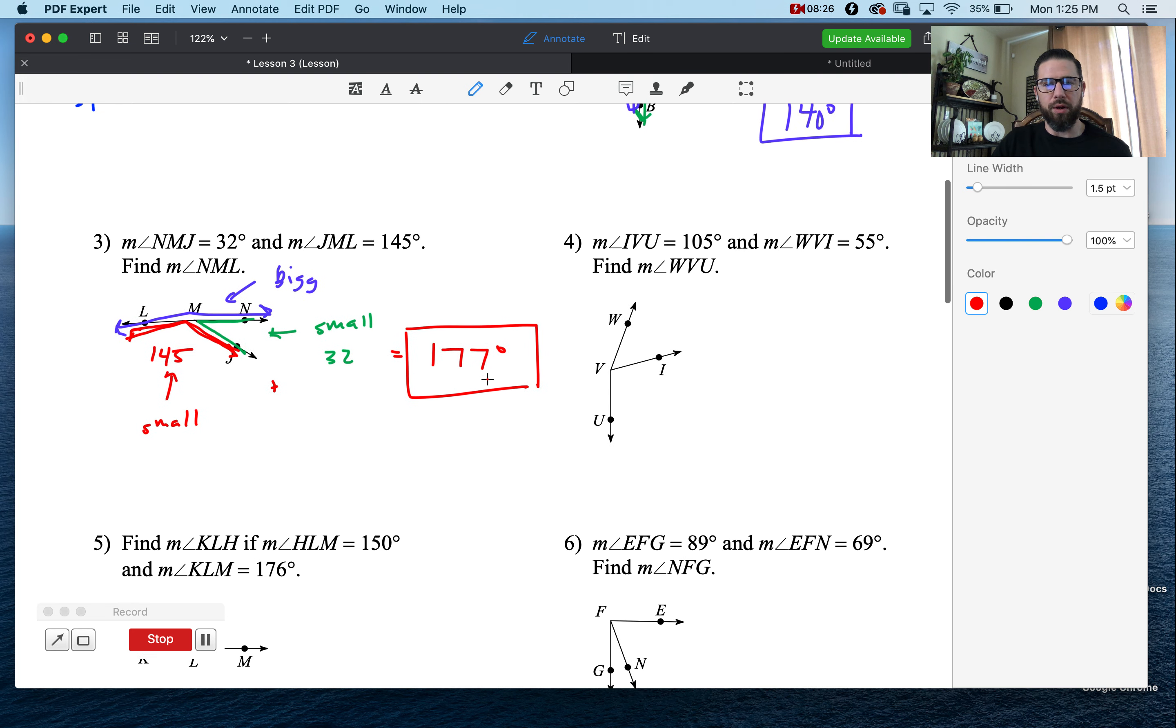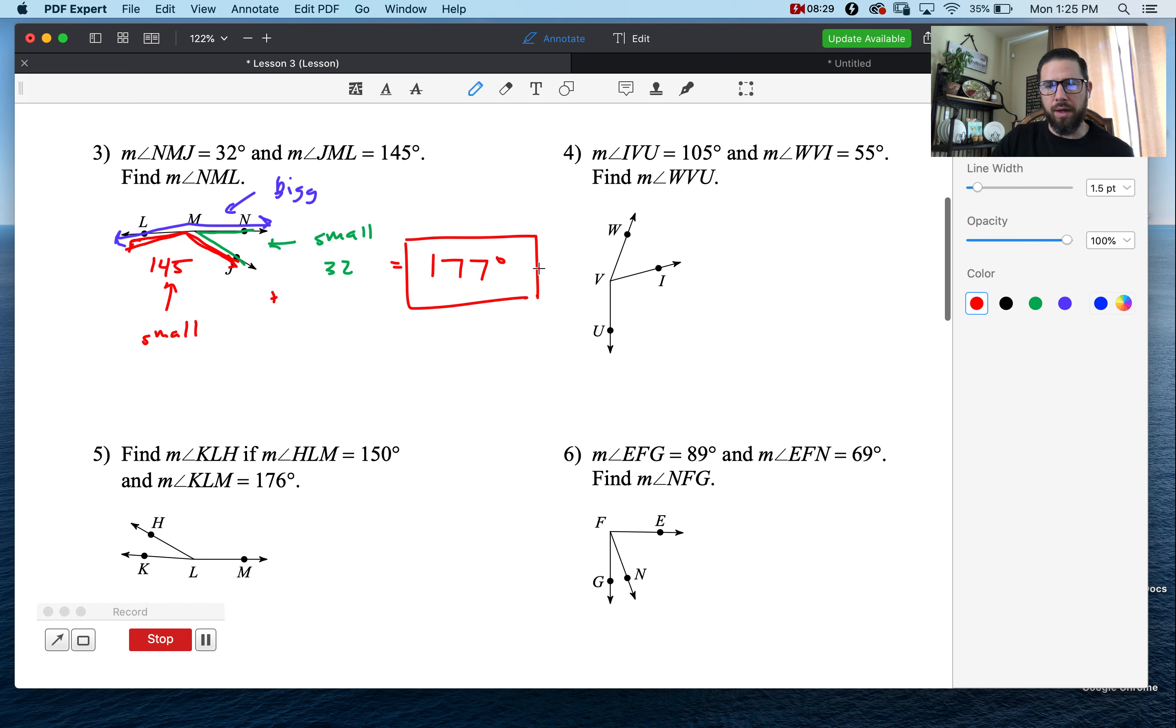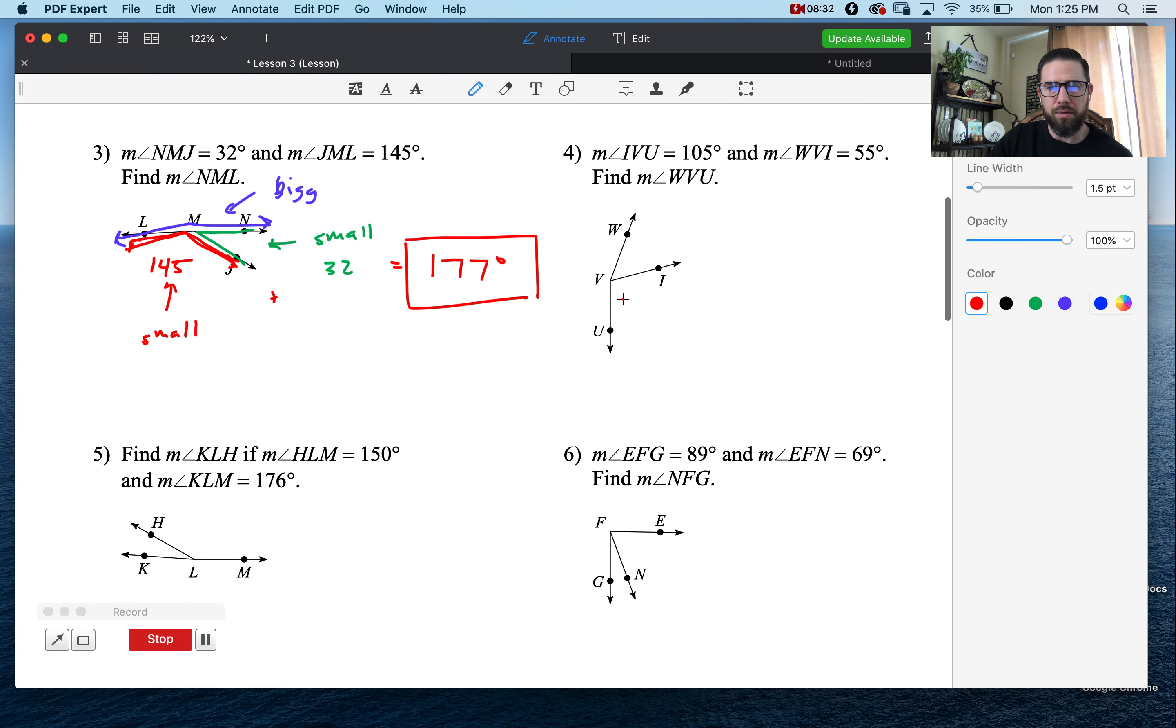Why don't I do number four together, and then I'm going to have you do five and six on your own. Let's look at four. IVU, that's from I to V to U. That's just a piece. This is a piece. We got 105. That's a small piece. What else did they give us? WVI. W to V to I. This is another piece. 55. This is a small piece. So, piece and piece. What do we do with the pieces? We add the pieces together to find the big one. WVU. That's the whole thing. You see? W to V to U. That's both pieces together. So we add 55 and 105, and we get 160 degrees. Boom.